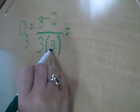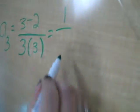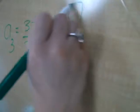To find a sub 3, you plug in 3 for both n's on the top and bottom. 3 minus 2 equals 1, and 3 times 3 equals 9. So a sub 3 equals 1/9.